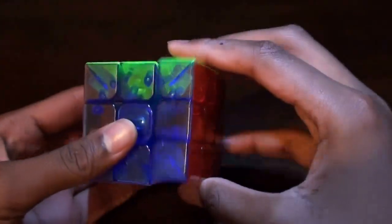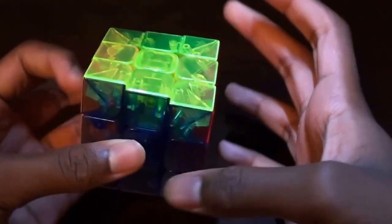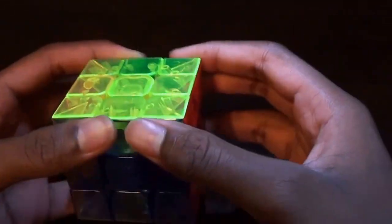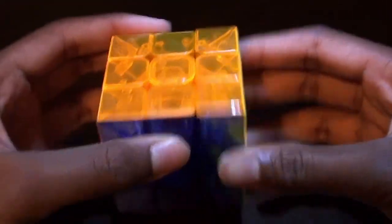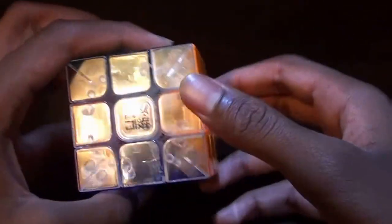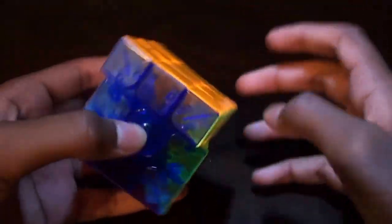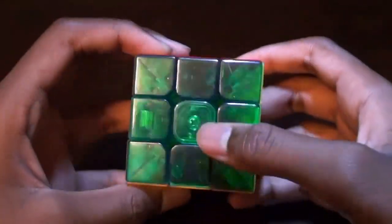So moving on to my second favorite puzzle. You can see it's another 3x3, but it's really weird. So this is a YJ Yulong, which is a pretty cheap cube, but that's not what makes it second on my list. What I like is how this is transparent stickerless.